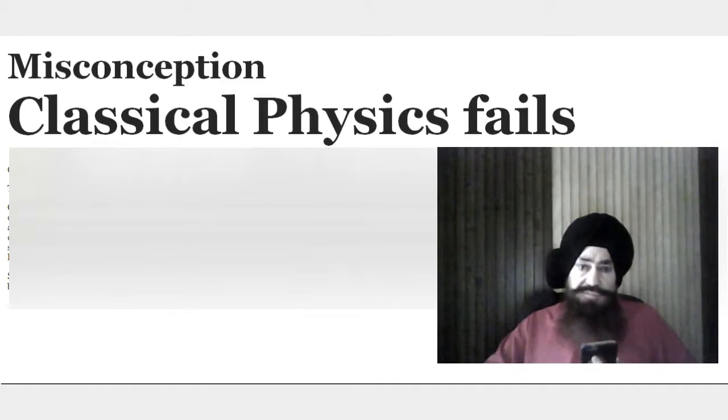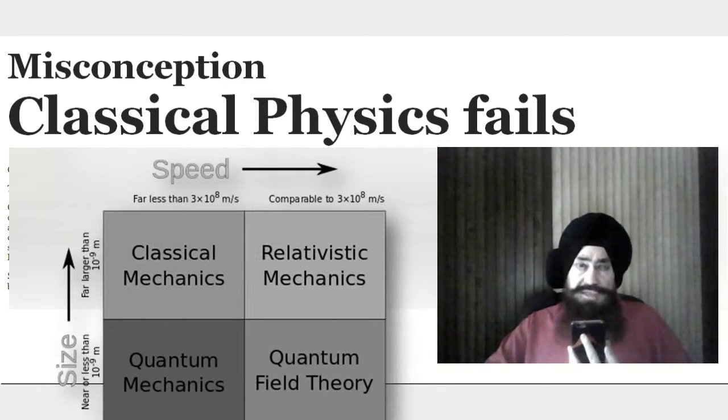Classical physics fails at very small distances like atomic conditions, nucleus distances, or high energy densities, or at high speeds approaching the velocity of light.